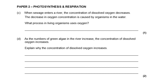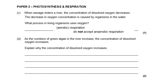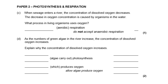This is a question that includes both photosynthesis and respiration from paper one. What process in living organisms uses oxygen? It's aerobic respiration. Explain why the concentration of dissolved oxygen increases — because photosynthesis that the algae carries out produces oxygen. So it isn't a large question, but you can see there are three marks there from your paper one content.